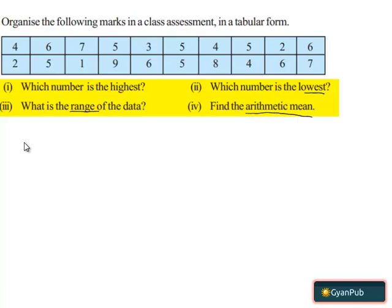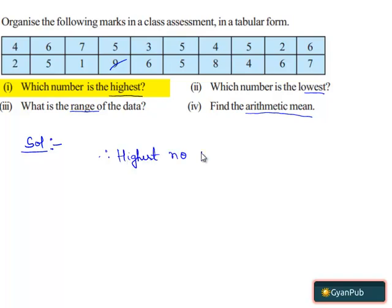Let's move on to the solution. When we observe the tabular form, the first part asks us to find which number is the highest. When we observe the tabular form, we find that 9 is the largest number. Therefore, the highest number is 9.